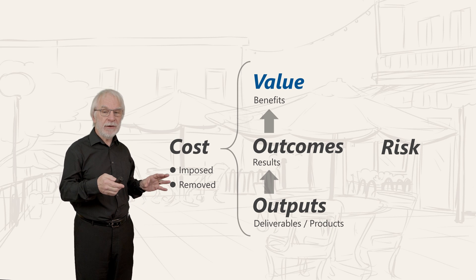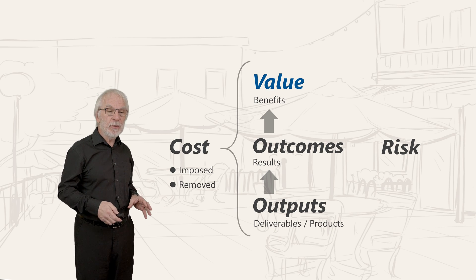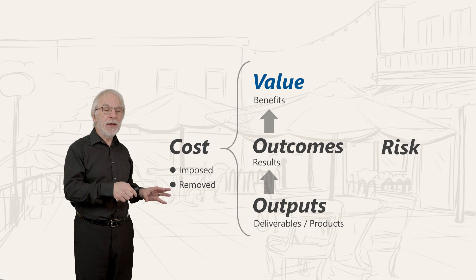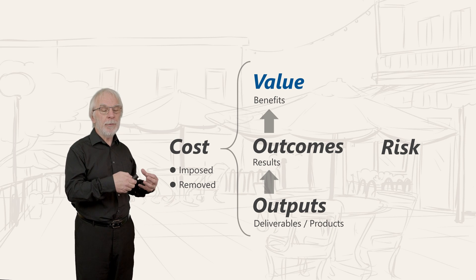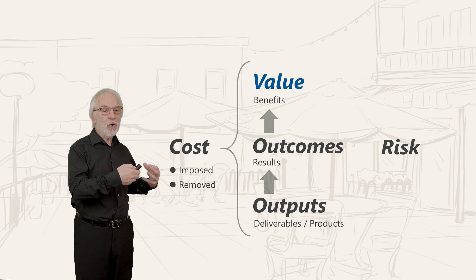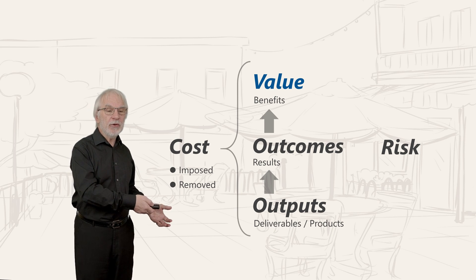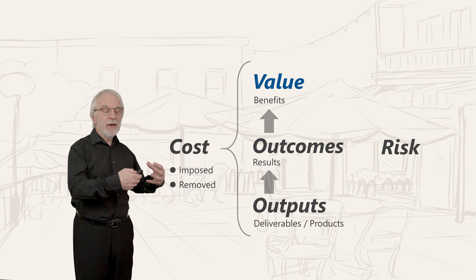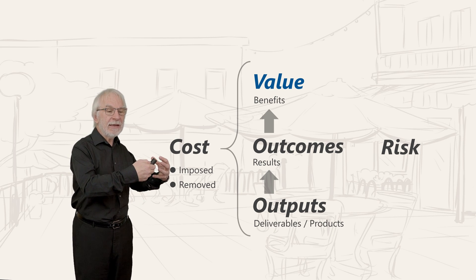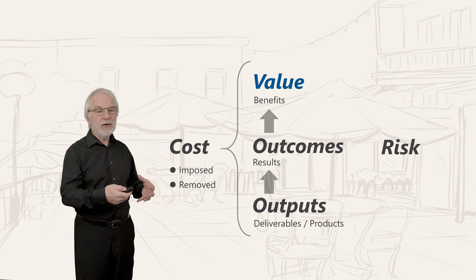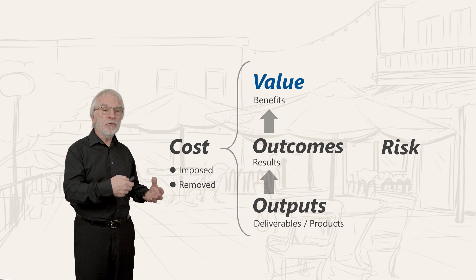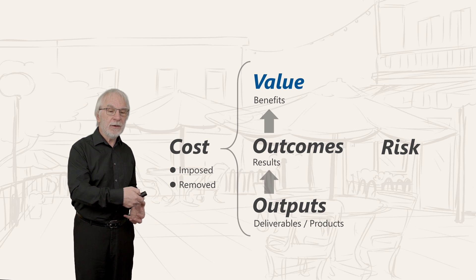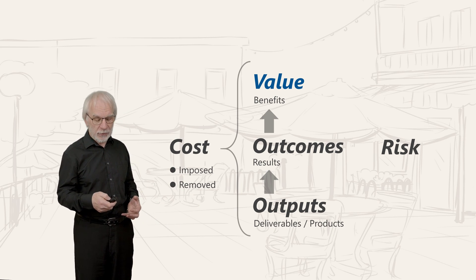We understand the money we spend — that's a simple thing we do at home. We know how much money we spend, we know the benefits we get from it, and we understand the costs we save. For example, insulating your house removes costs in terms of lower electricity bills.